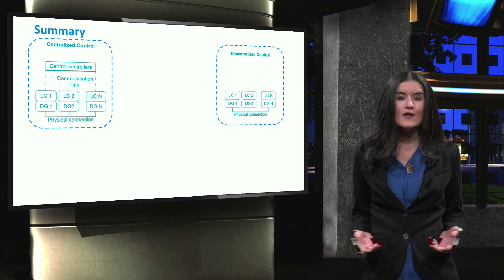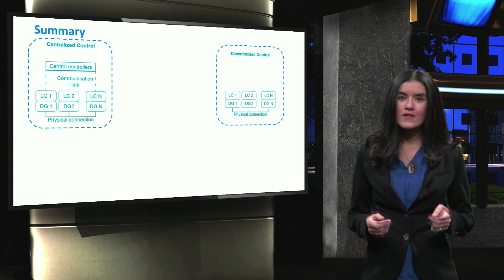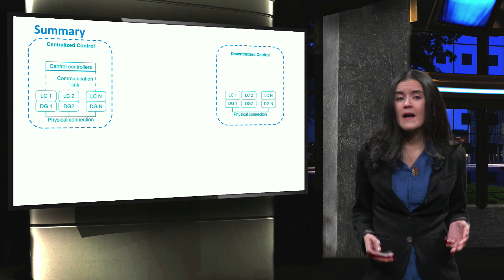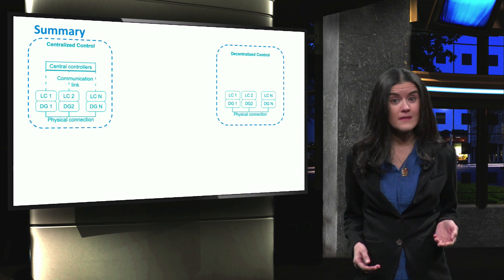In summary, today we highlighted the main characteristics of centralized and decentralized internal microgrid control. In centralized control, a single entity, the microgrid central controller,